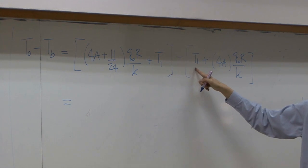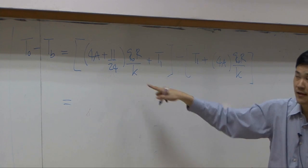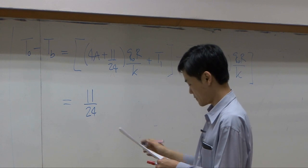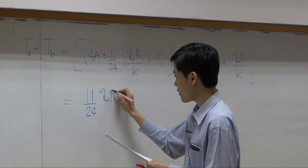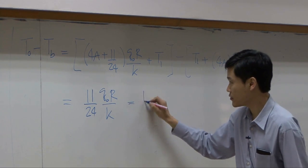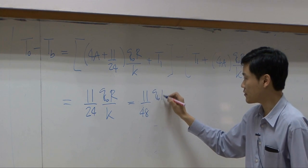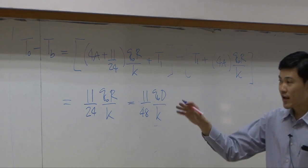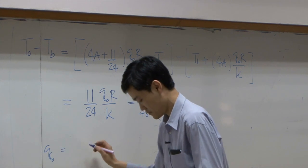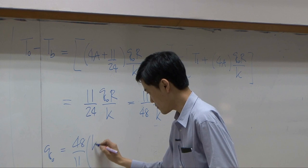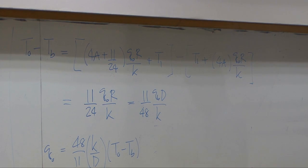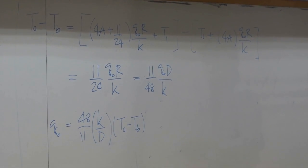So T1 here and T1 there cancel out. The rest should have the common term to be q0R over K. So you will have 11/24 q0R over K. Or equal to 11/48 q0D over K. So if you change, rearrange the equation, you get q0R over K.